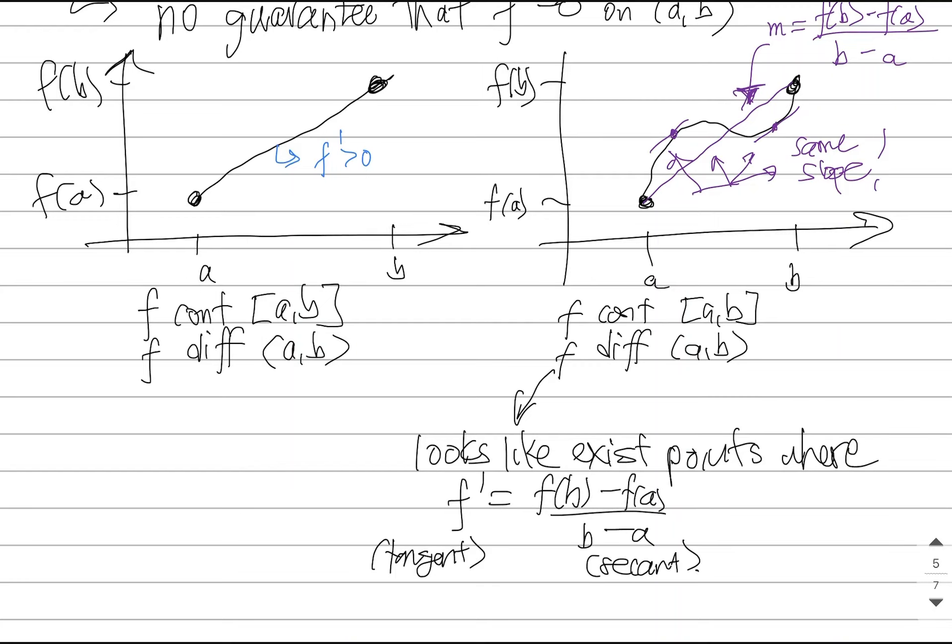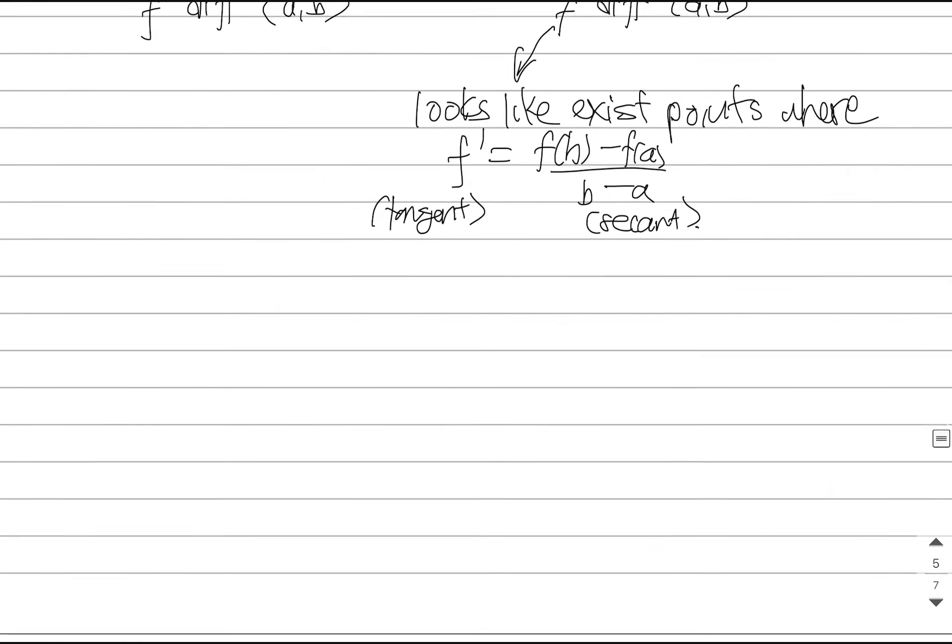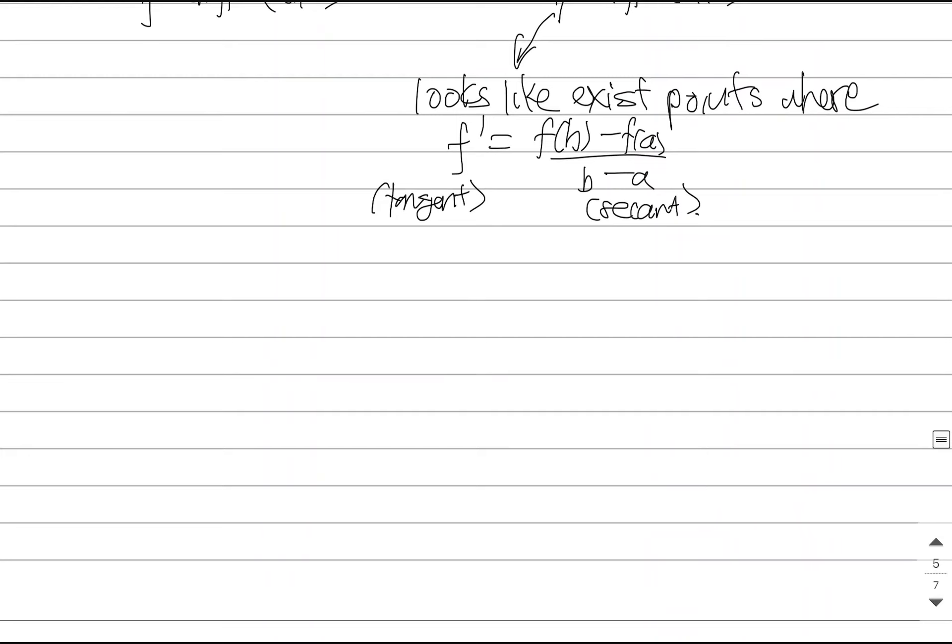This is more than just a coincidence. This, in fact, does turn out to be a true statement, and it's something that you can prove using Rolle's theorem. Now, we aren't going to prove it here. We will just state the result as a theorem. This is called the mean value theorem, because it's talking about the secant slope.